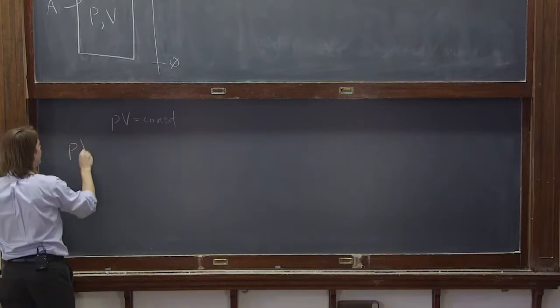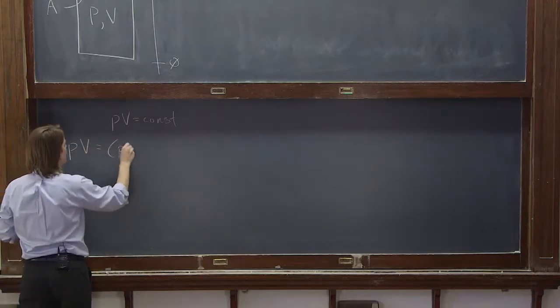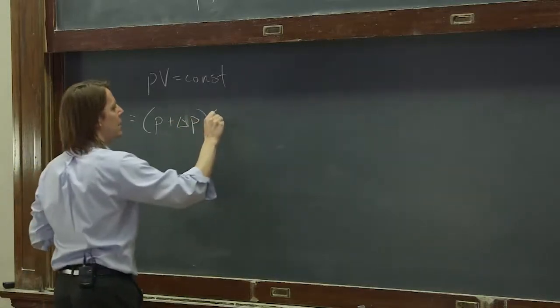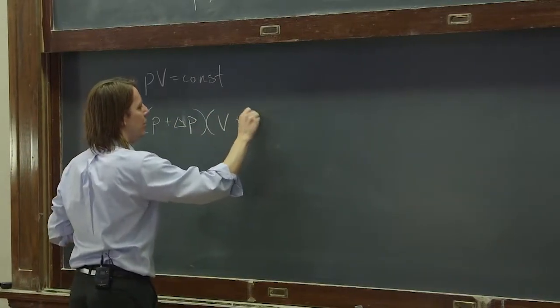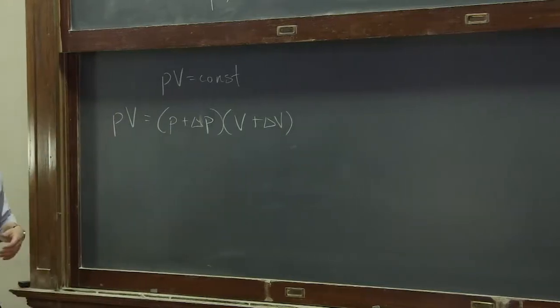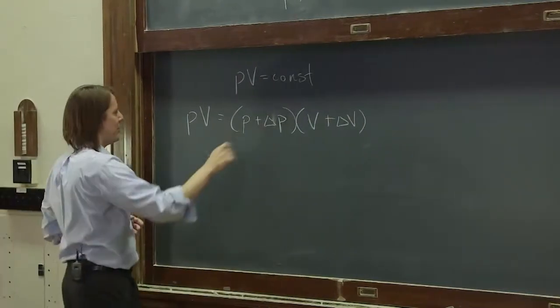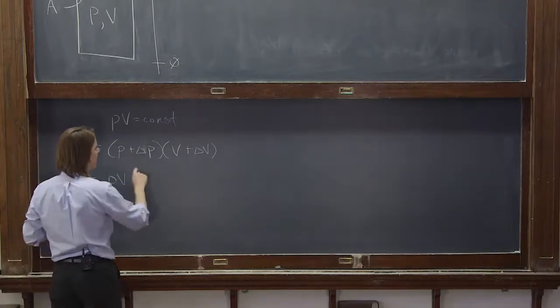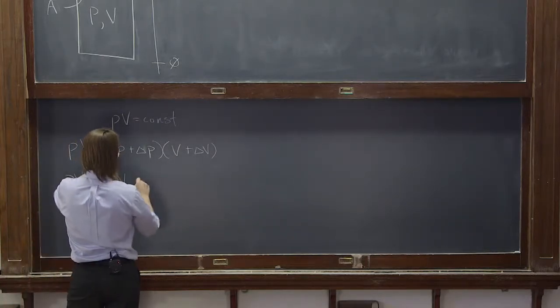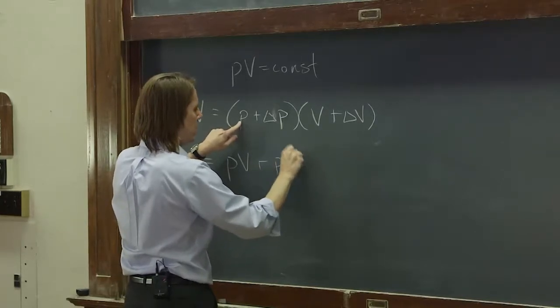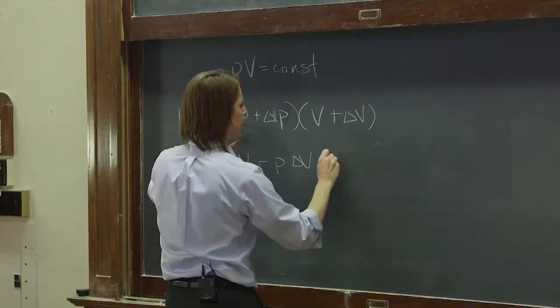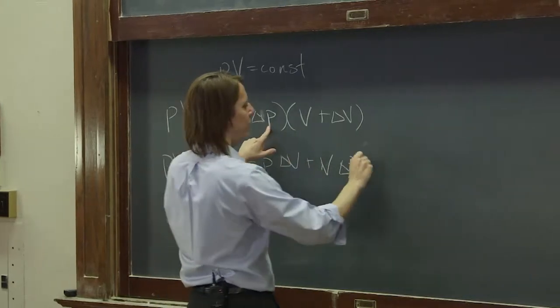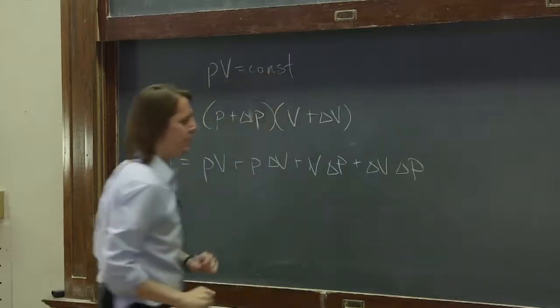It must always be the same. So we're saying PV equals P plus delta P times V plus delta V. If we multiply that out, we're saying PV is the original PV plus P delta V plus V delta P plus delta V delta P.